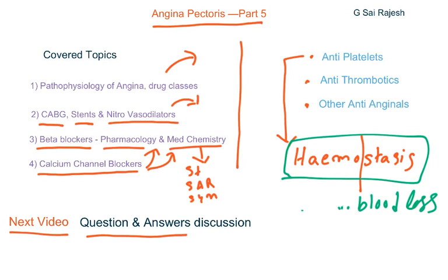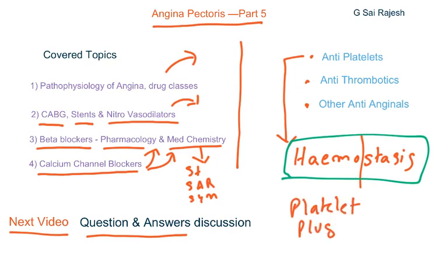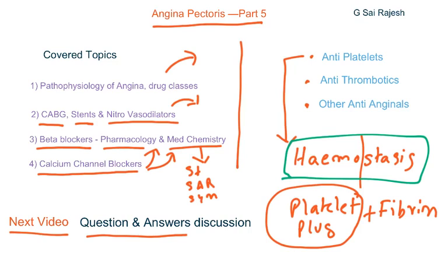Hemostasis involves two major processes. One is platelet plug formation, and the other is formation of a fibrin clot. In platelet plug formation, all the platelets aggregate. Simultaneously, a coagulation process is initiated which forms fibrin. The platelets loosely form a platelet plug, and then fibrin integrates and ties them together, resulting in a stronger clot or thrombus formation.